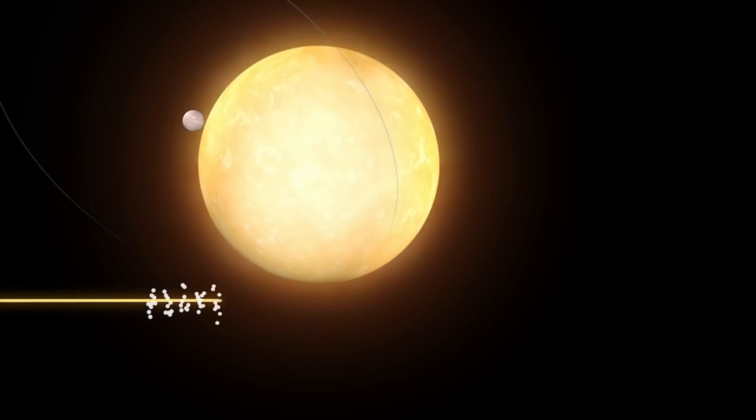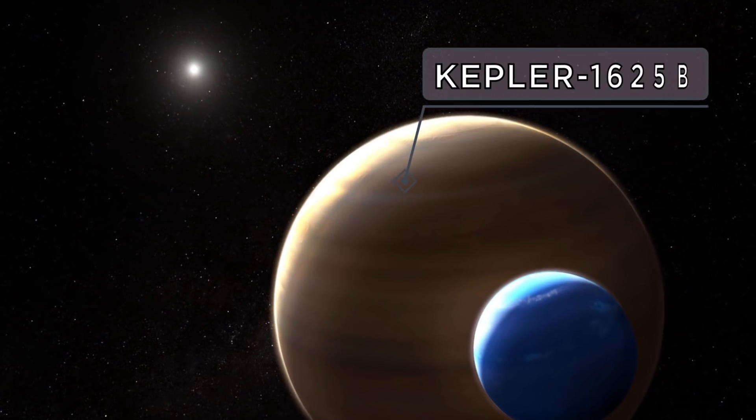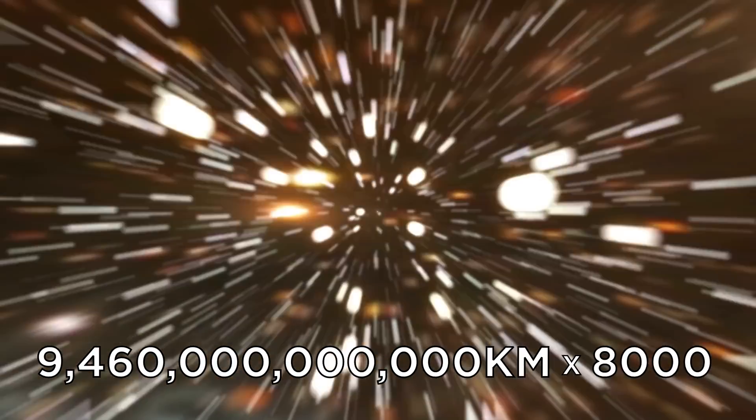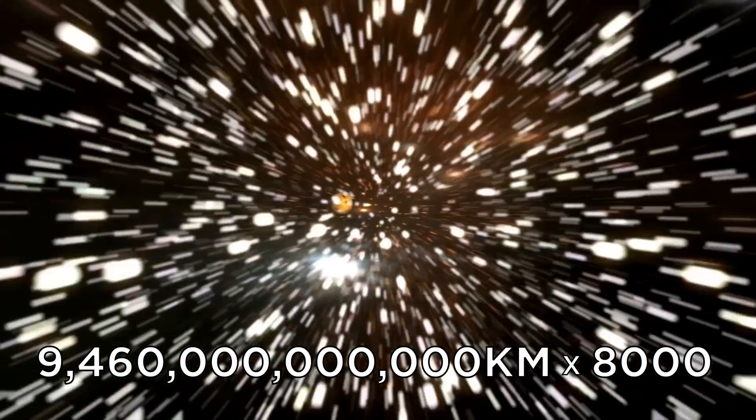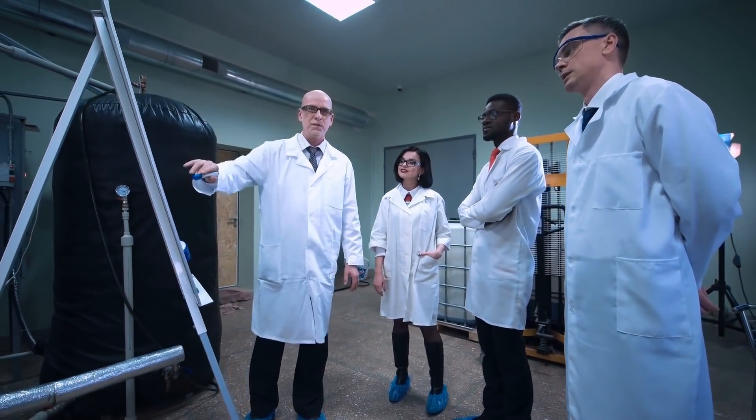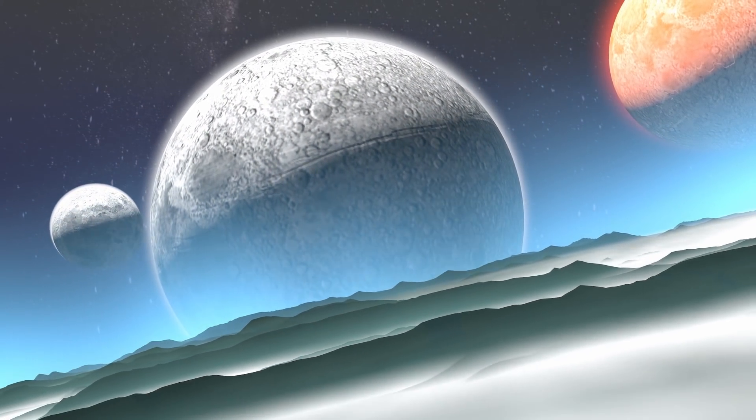In October 2018, Alex Teachey and David M. Kipping published a study in Science Advances about the first exomoon discovery. It was orbiting planet Kepler 1625b. That's located 8,000 light years away, which is equal to about 9.46 trillion kilometers multiplied by 8,000. If the science community confirms that this is the first exomoon ever discovered, it would help us know more about the properties of planetary systems other than our own.